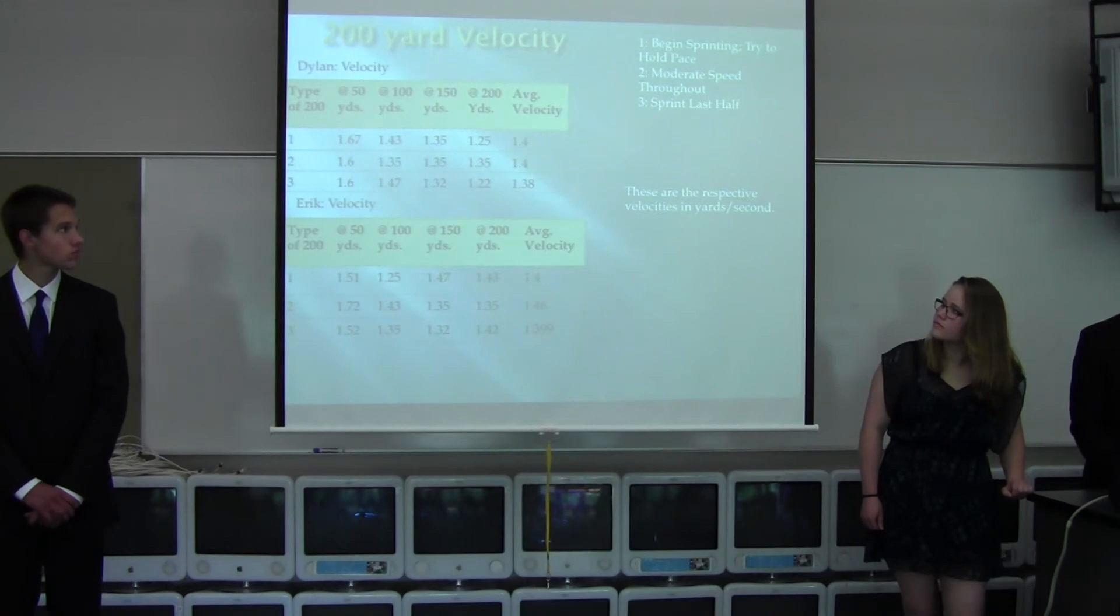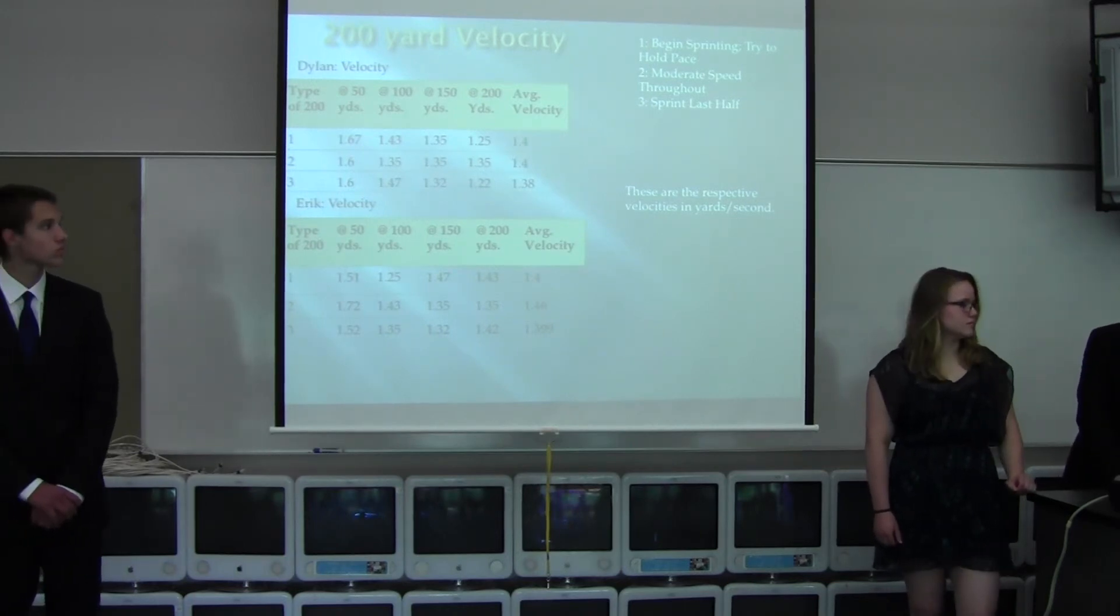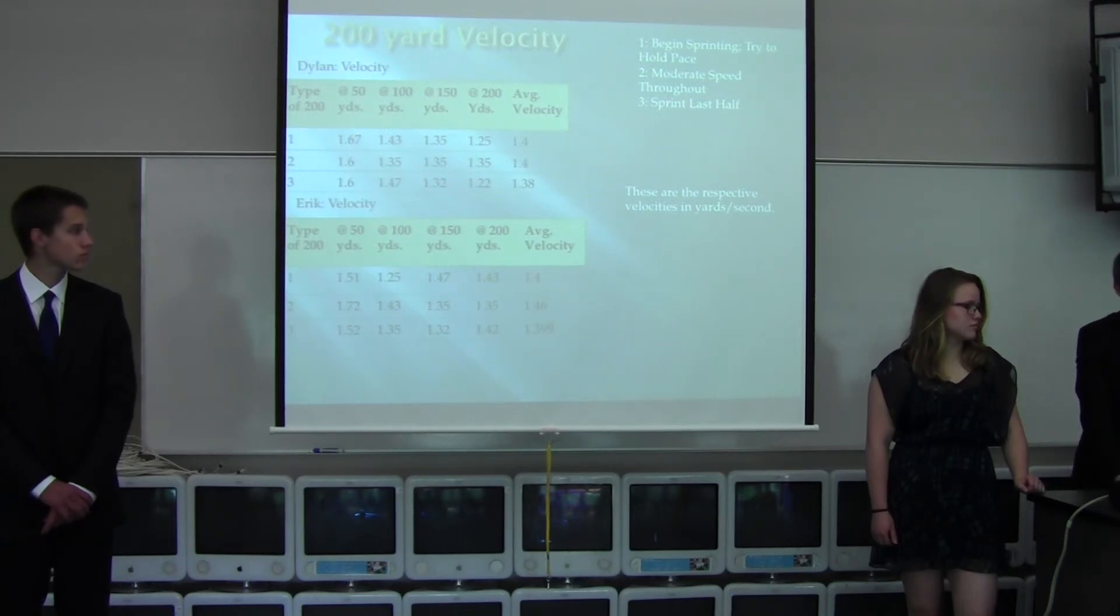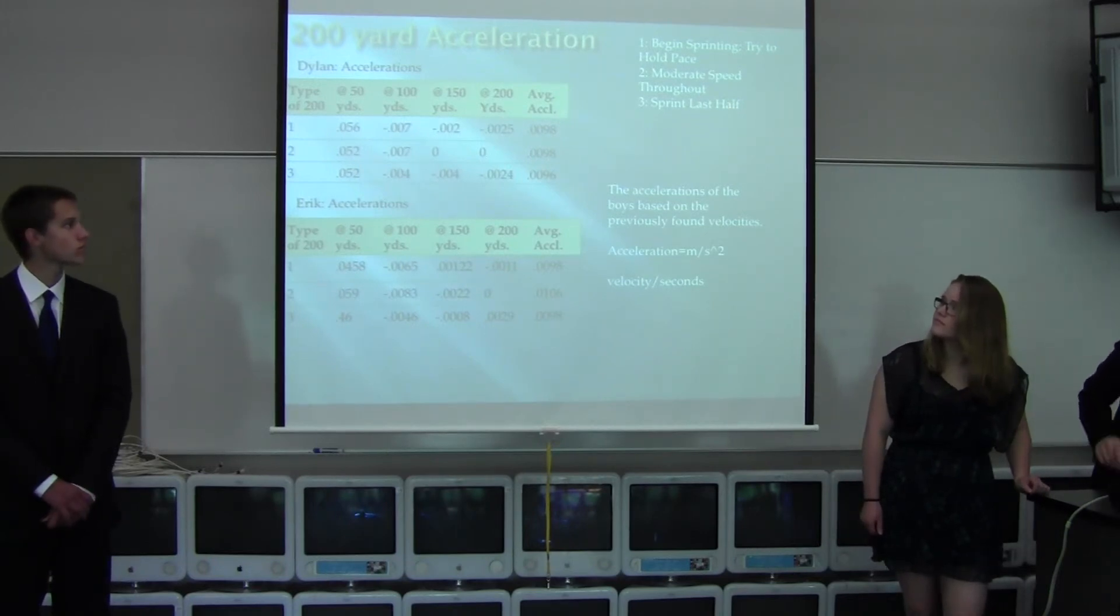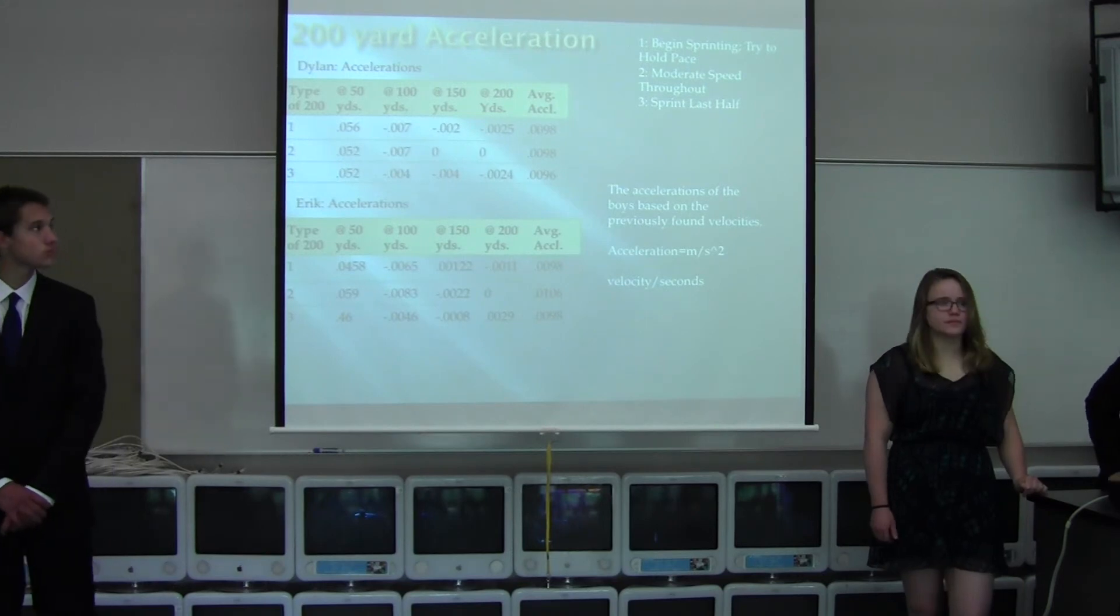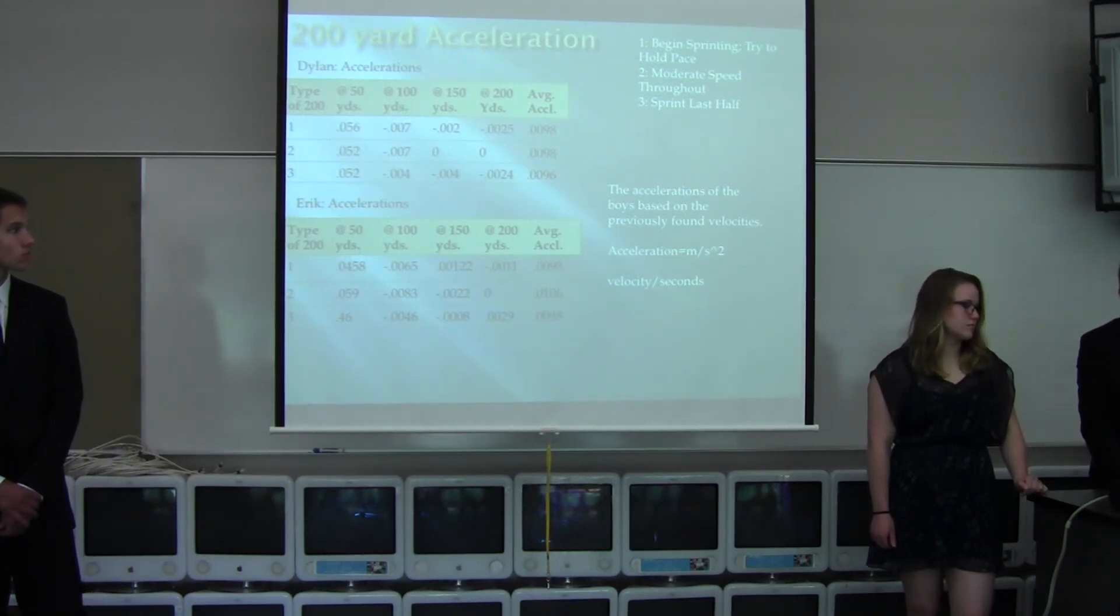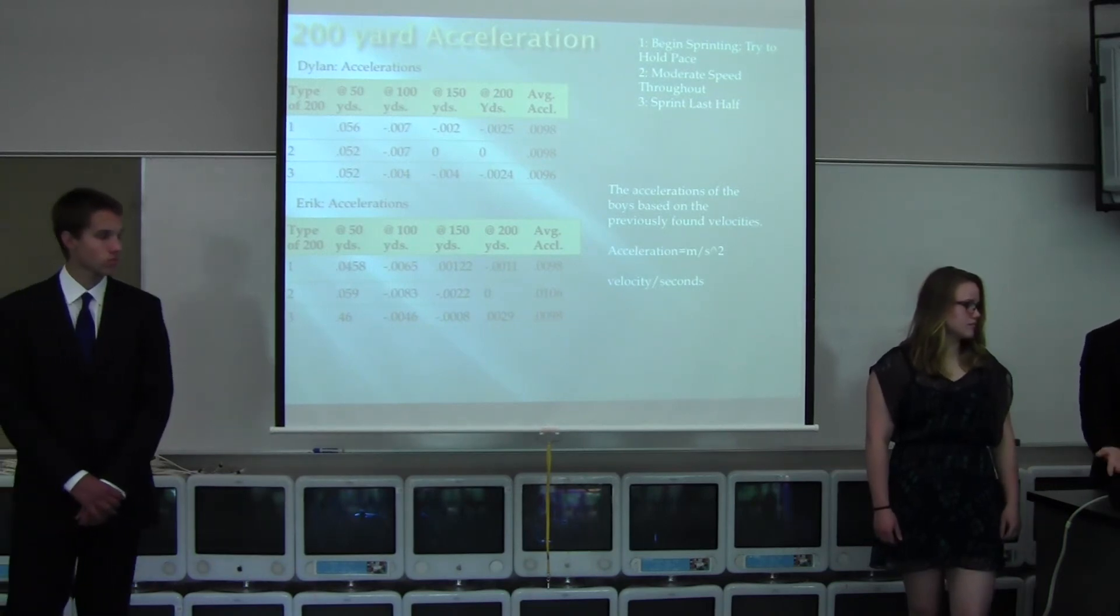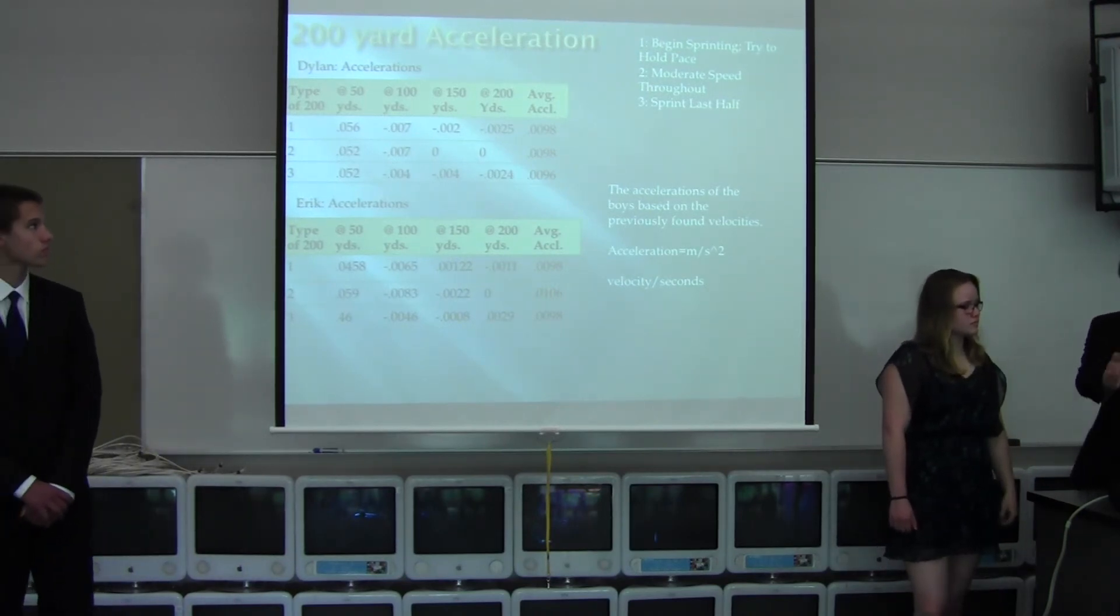This is all in yards per second. You can see Dylan slowly slows down throughout, but it's still hard to see. So we put it into acceleration, and now it's easy because once it's negative, that's him slowing down, and if it's positive, he's speeding up. When Dylan was supposed to sprint the last half, he didn't really speed up - he kept constant. When he was supposed to keep constant, he slows down a bit, which we expected. And when he was supposed to sprint the entire thing, he starts off quickly and then very quickly slows down.